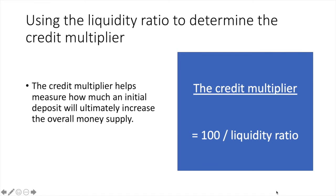You may have figured out how to use a liquidity ratio to determine how much the increase in the overall amount of loans and reserves will be. We use the liquidity ratio to determine the credit multiplier: divide 100 by the liquidity ratio and it will give you the value of the credit multiplier.